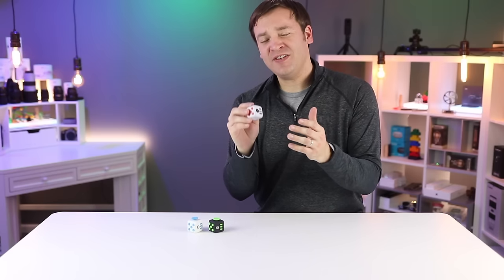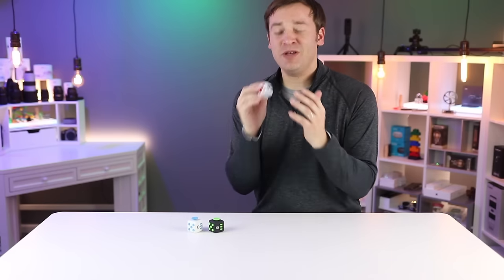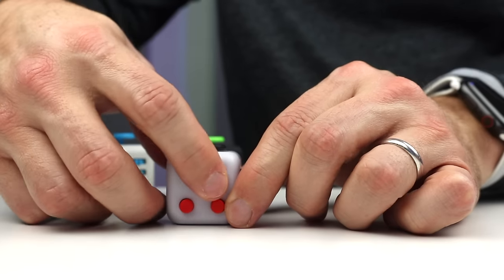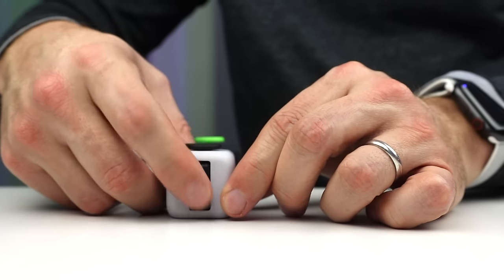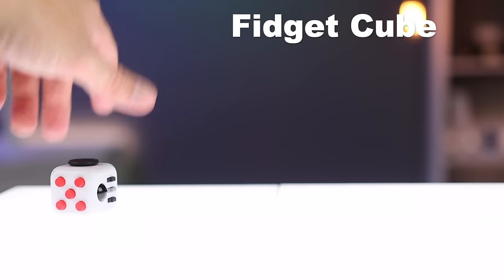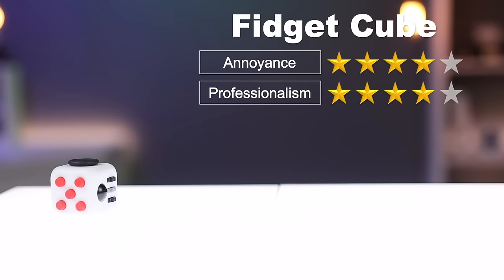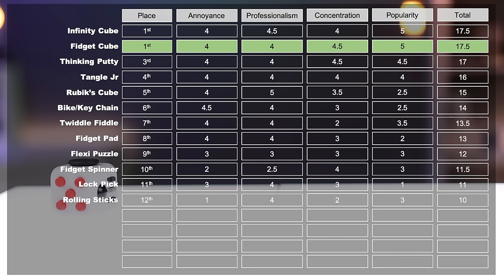Antilabs blew away their $15,000 goal on Kickstarter with nearly $6.5 million with the fidget cube. That is crazy. It has six sides, it has switches and dials and things on all of them, and it is extremely popular. It gets four stars for annoyance, four stars for professionalism, four point five stars for concentration, and five stars for popularity, and that puts it tied in first place with the infinity cube.